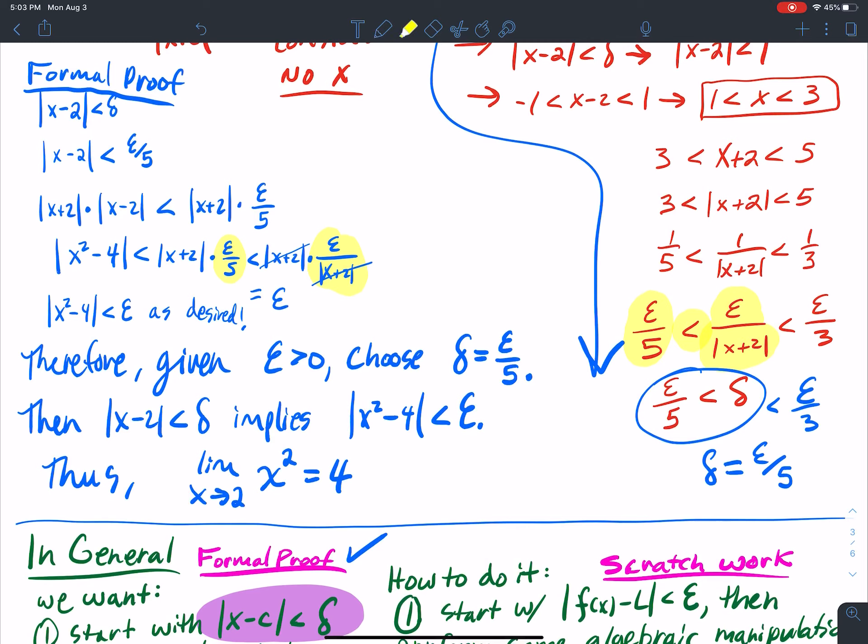So what's always going to be written the same in your final conclusion? Therefore, given epsilon greater than 0, choose delta equal to. Then absolute value of x minus something is less than delta implies absolute value less than delta. Thus, the limit as x goes to blah, blah, blah.